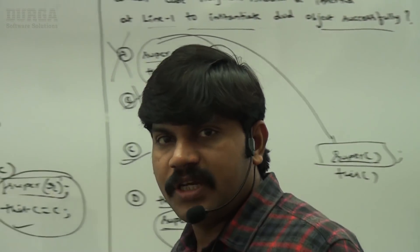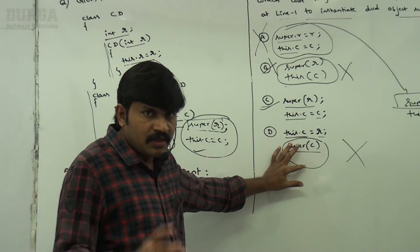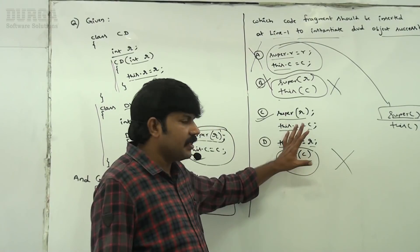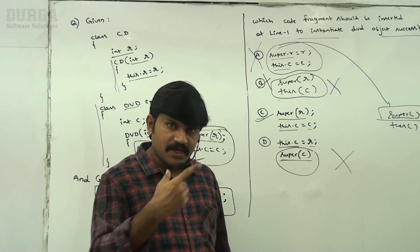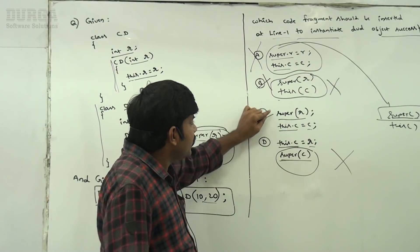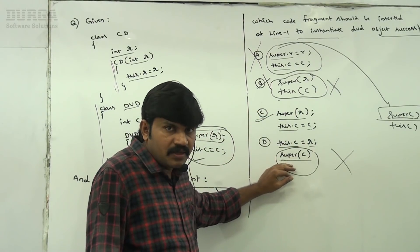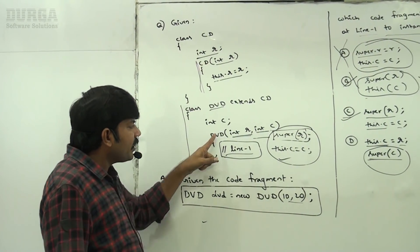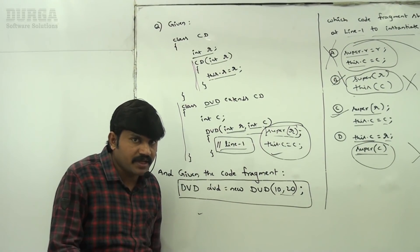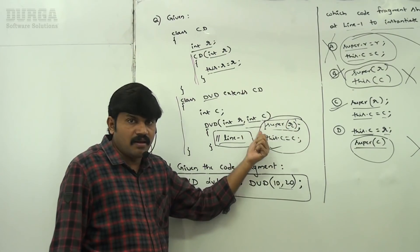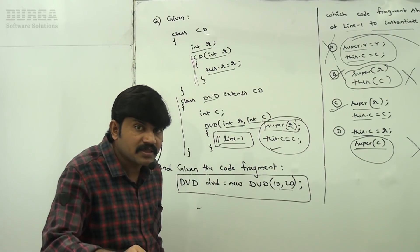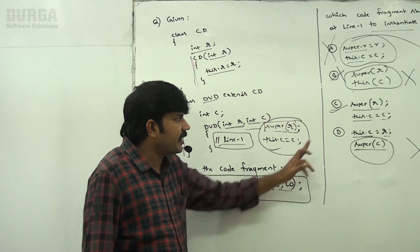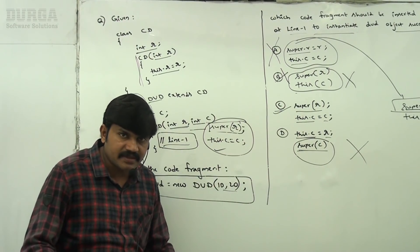The important conclusions: either super or this we have to use only in the first line — we can't use both simultaneously. One more important conclusion: if a parent class contains an argument constructor, while writing child classes we compulsory require to take care about the constructor call. If you are not providing it, the no-argument constructor call will be placed by the compiler, which may lead to a compile-time error. So the correct answer is option C.